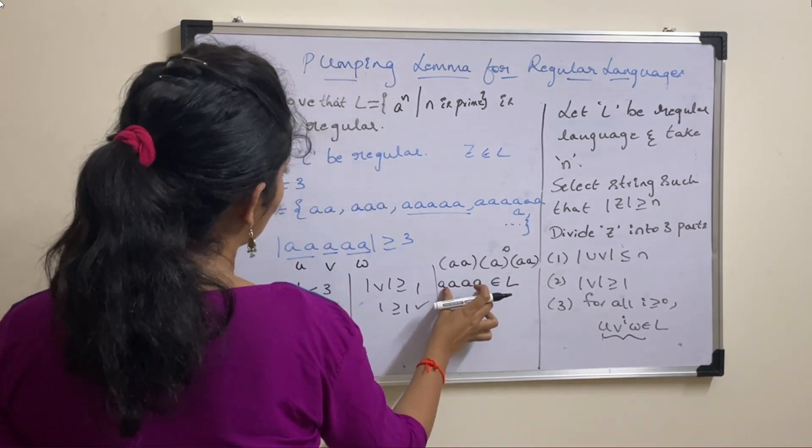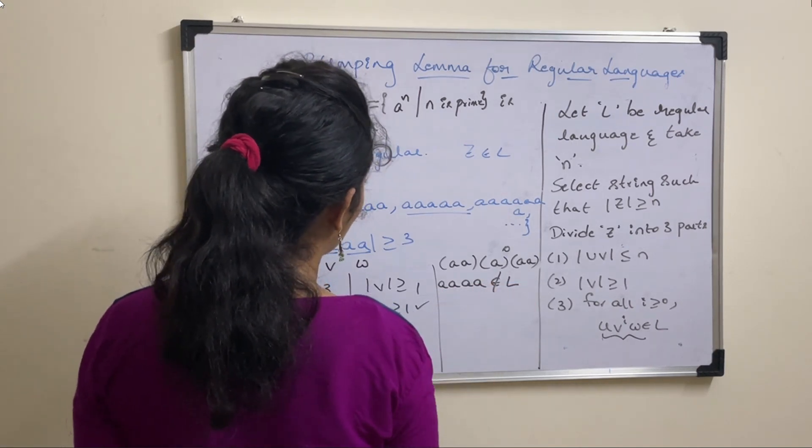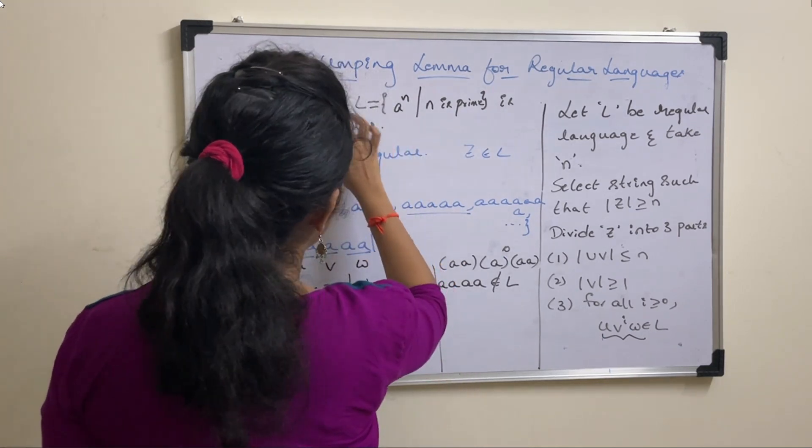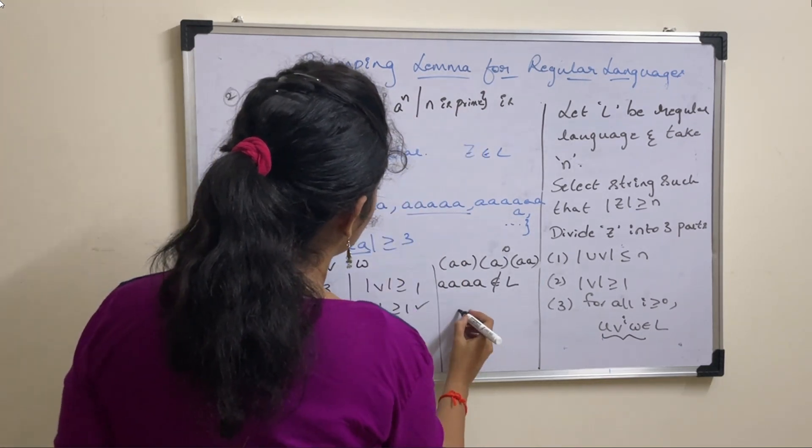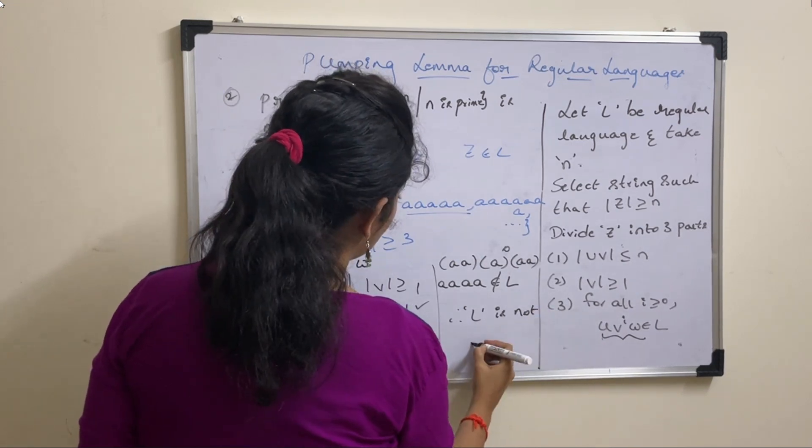So this is not a prime number. We can say that this string is not a part of language. This is not present here. Therefore, this language is not regular. Therefore L is not a regular language.